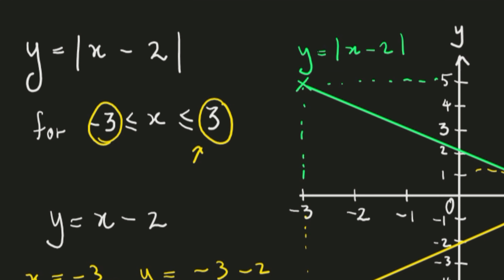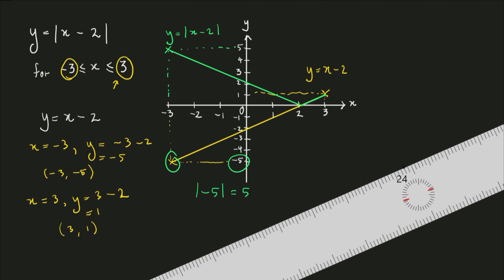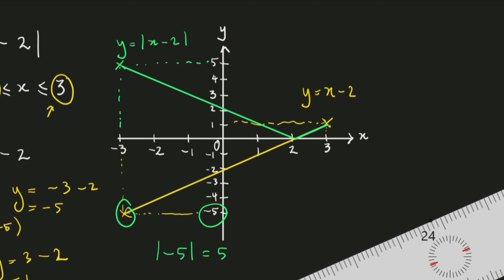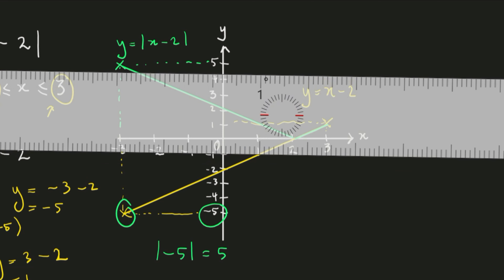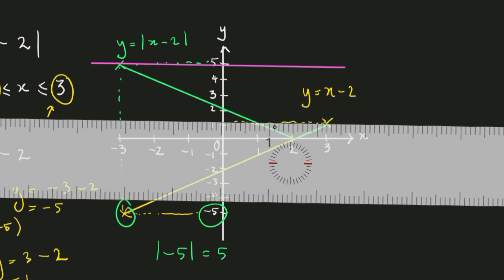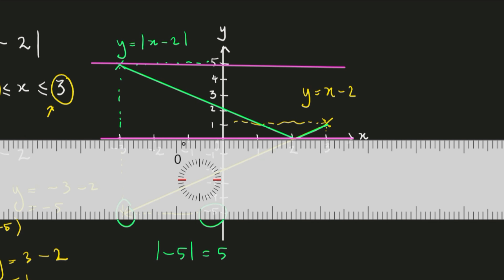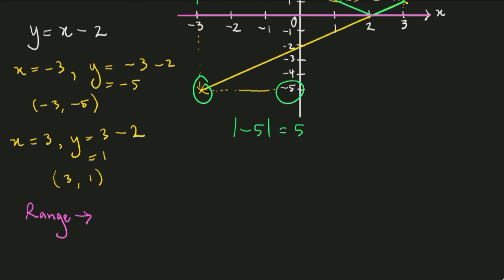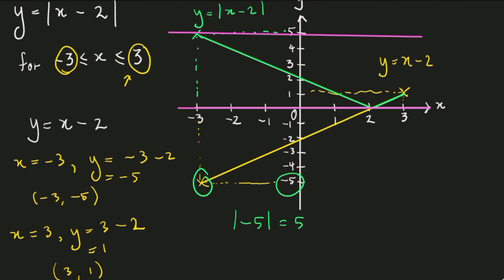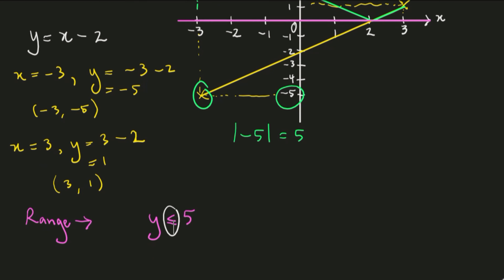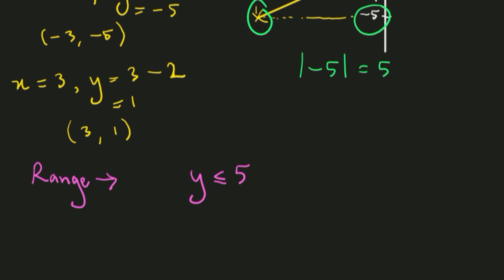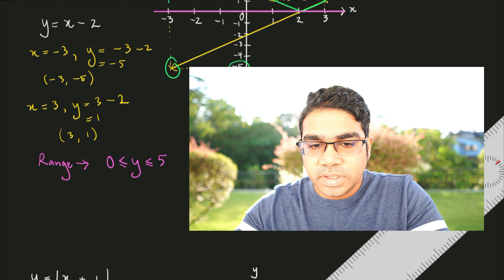the range is all the corresponding Y values for that domain. Looking at the green graph, we take the highest and lowest Y positions. The highest value here is 5, and the lowest value is 0. So our range is: Y is greater than or equal to 0 and less than or equal to 5 — following the same inequality signs used in the domain. The range of this function is 0 to 5.